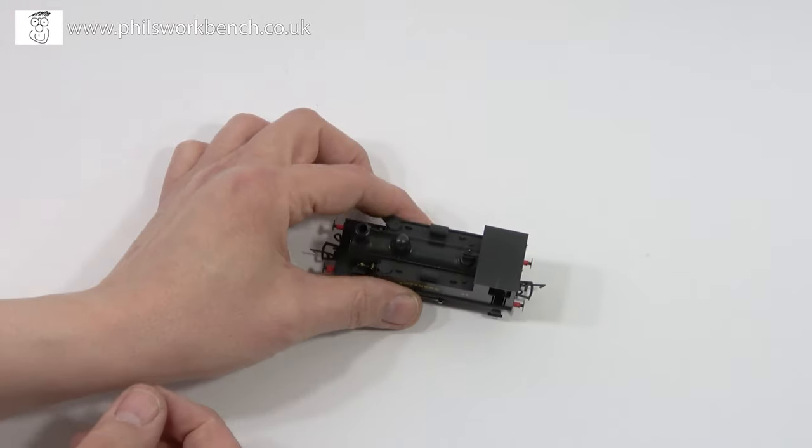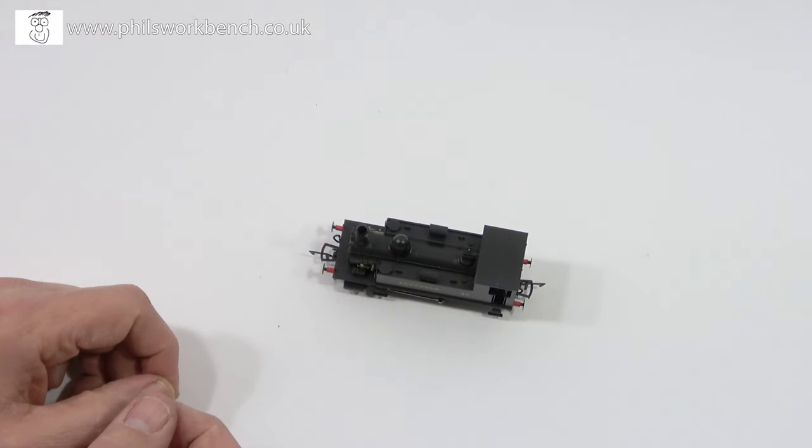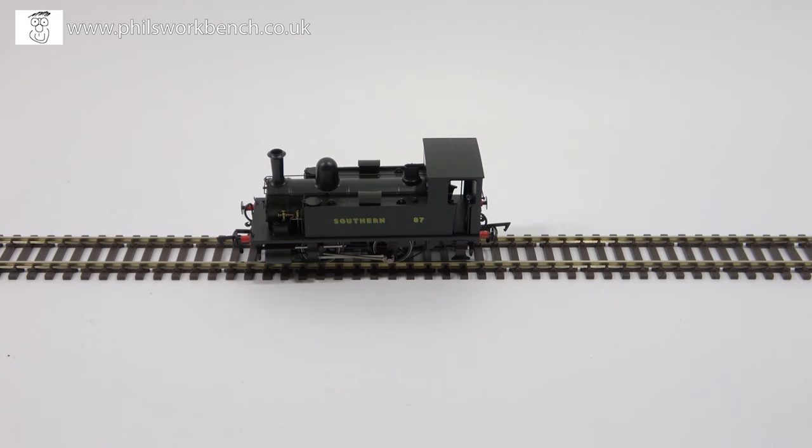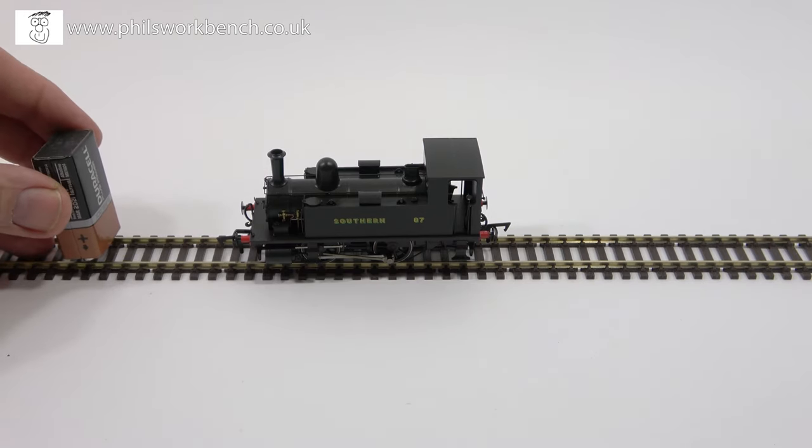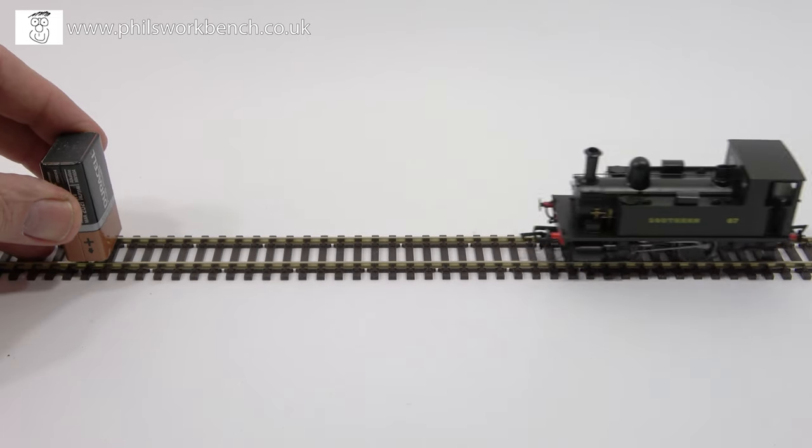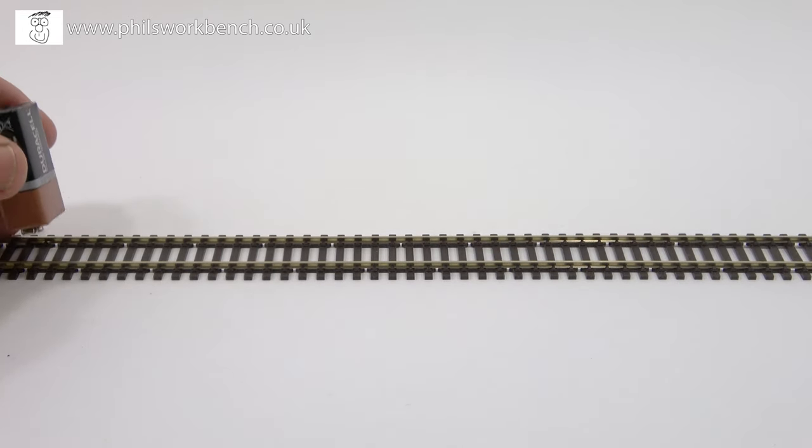Let's put it on the track. Right, the loco is now on a piece of Peco code 75 OO track. Looks good. The first test is: let's give it a dose of 9-volt battery and see what happens. It moves. 9-volt battery turned around.